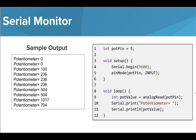In this example, the string "potentiometer equals" that we printed to the screen using the print function is situated directly next to the value of the pot value variable. After the variable is printed, a new line is added, so the next time "potentiometer equals" is written to the screen, it is on a line separate from the one above.